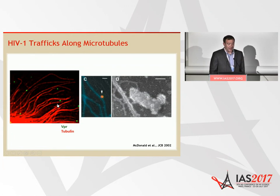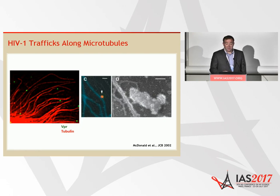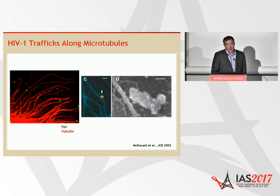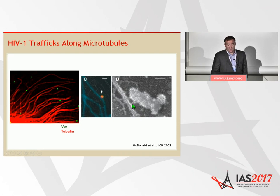For a number of years, people have observed that HIV can traffic along microtubules. I show images here from Dave McDonald when he was in the Hope Lab, where he did some correlative EM to observe viral capsids trafficking along microtubules. Many other labs have observed a microtubule-dependent aspect of infection. Disrupting dynein-mediated trafficking towards the nucleus during infection can perturb the process of uncoating, whereby the viral core disassembles during infection to promote infection. One question that hasn't been answered is the nature of this bridging molecule connecting the capsid to the microtubule.